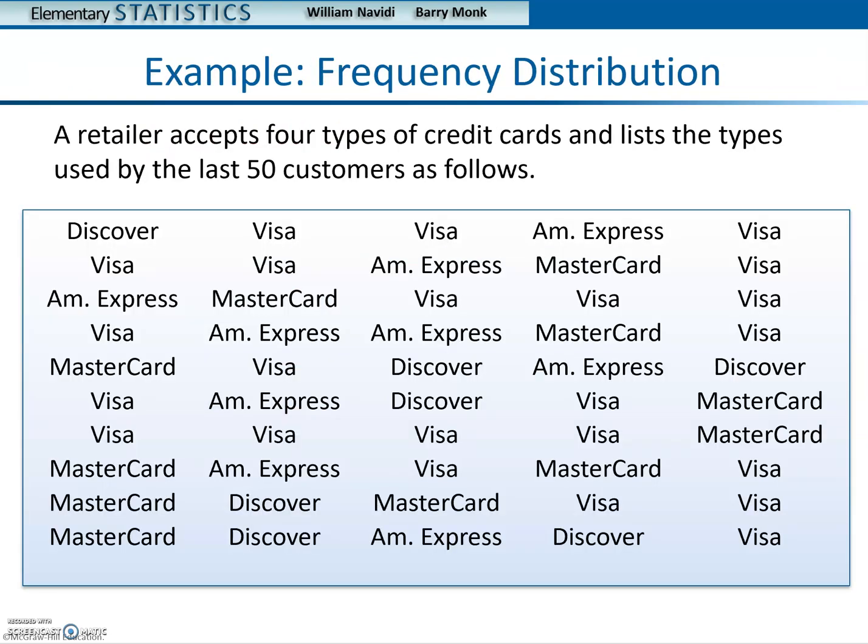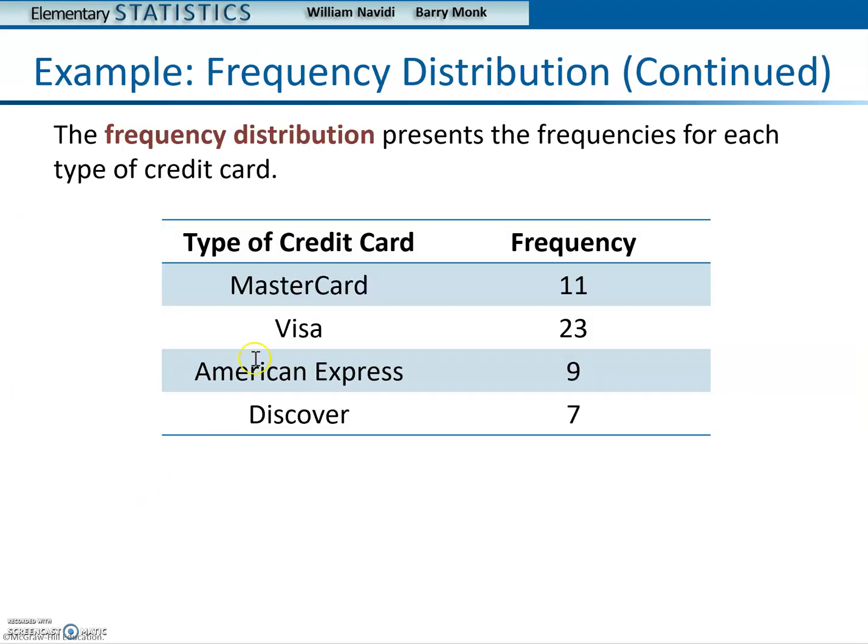So if you go back and look at the frequency distribution, they're just adding up how many MasterCards there were and how many Visas, how many American Express, etc. And they come up with 11 people that used MasterCard, 23 people that used Visa, 9 people that used American Express, and 7 people that used Discover.